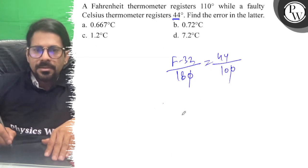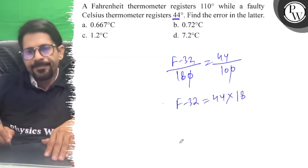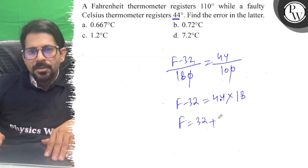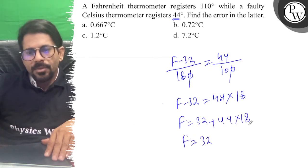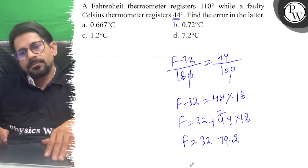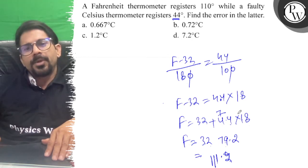So F-32 is equal to 44 into 18, and that's 10 is 4.4 into 18. So F-32 plus 4.4 into 18, so F-32 is equal to 79.2. So you have F is equal to 111.2.